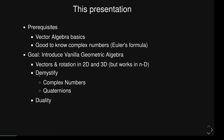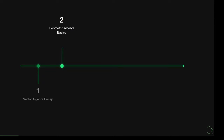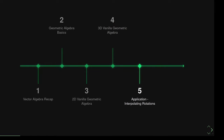Another goal is to demystify complex numbers and quaternions, which we usually just make up — they're kind of abstract, but here they get a real geometric meaning. I'll also show duality. The outline: first a short recap of vector algebra, then geometric algebra basics, then 2D and 3D geometric algebra, one application on interpolating rotations, and finally how to go beyond vanilla geometric algebra into some of the more interesting and useful algebras.